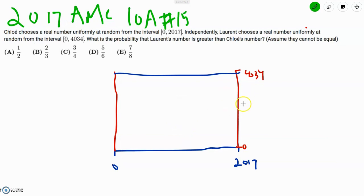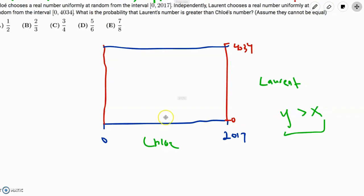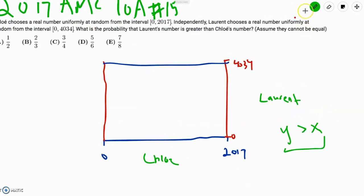So if Laurent's number is greater than Chloe's number, we know that the y-axis is Laurent, and the x-axis is Chloe, so then we need y greater than x. Or, if you know this line, then you'll see that it looks somewhat like this. This is the equation of y equals x. This graph is into scale, but this should be about 2017. And y greater than x corresponds to the region over here.